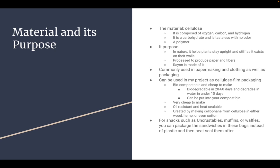Its purpose. In nature, it helps plants stay upright and stiff as it exists on their walls. It is processed to produce paper and fibers, and rayon is made of it. It is commonly used in papermaking and clothing, as well as in packaging.